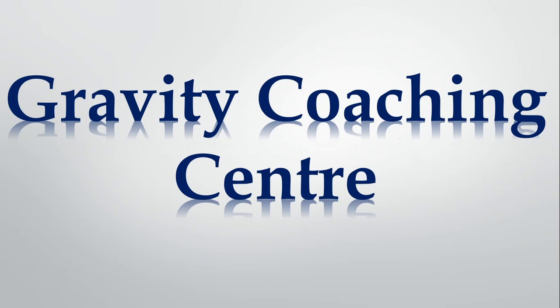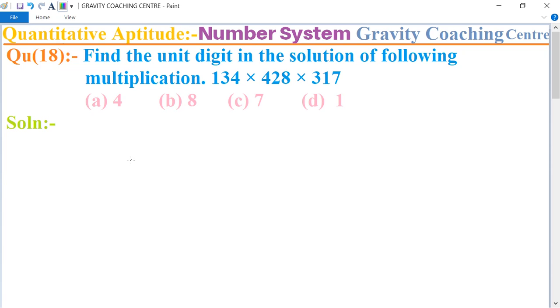Welcome to our channel Gravity Coaching Centre. Quantitative Aptitude, chapter Number System, question number 18. Find the unit digit in the solution of following multiplication: 134 × 428 × 317. In this question, first of all we multiply their units digit of the following numbers.